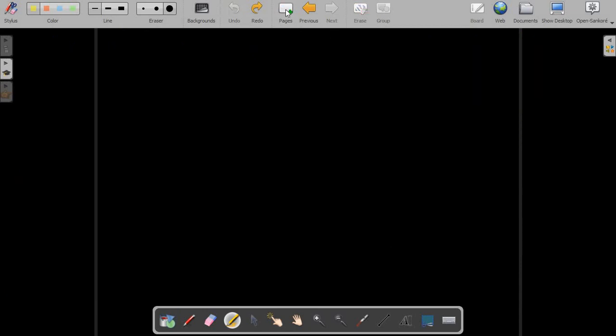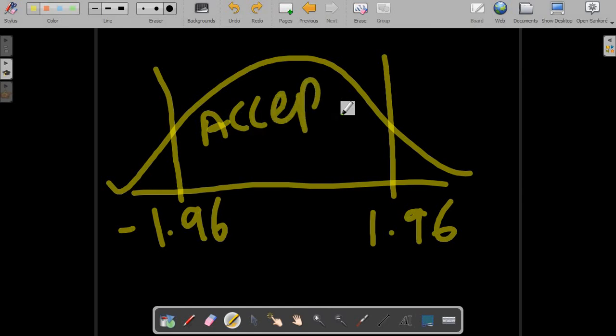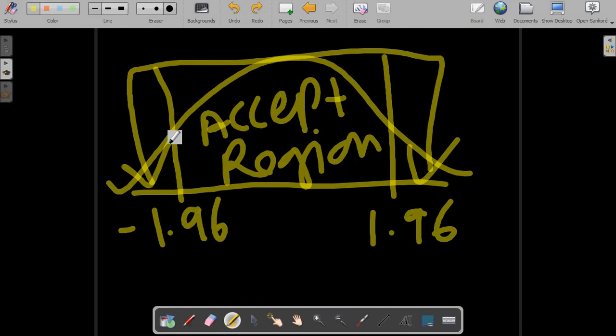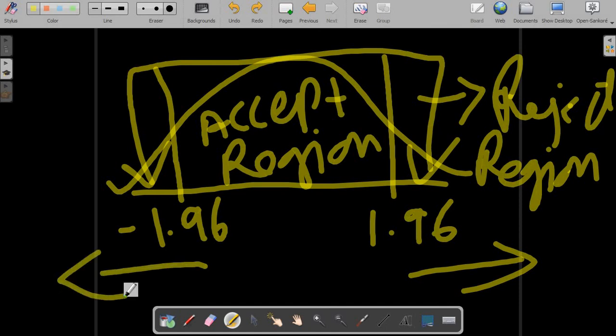On my normal distribution plot, this is the decision parameters: 1.96 and minus 1.96. This is my acceptance region. And these two areas form my rejection region. Anything beyond these values get rejected. In our case, I got 11.79, which is much beyond. So my H0 gets rejected. This is how you test your hypothesis using the z statistic for a single population.